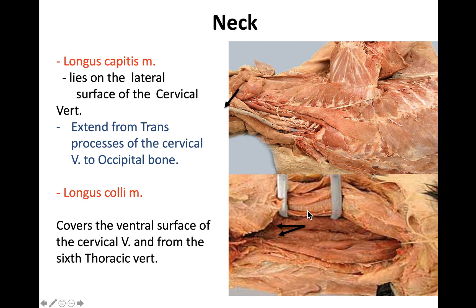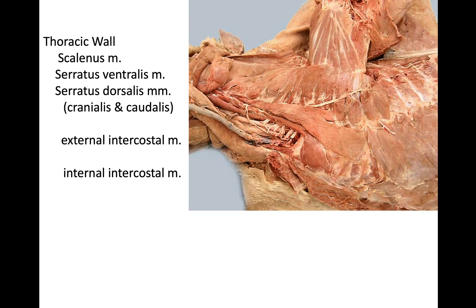The other muscle we have is the longissimus colli. To be able to see this muscle, we have to reflect the trachea. It is usually found ventral to the cervical region. This muscle covers the ventral surface of the cervical vertebra and starts from thoracic vertebra number six.